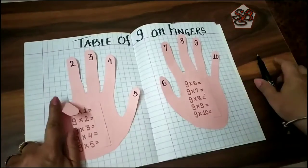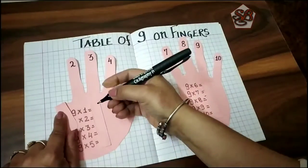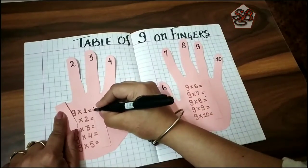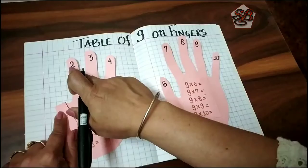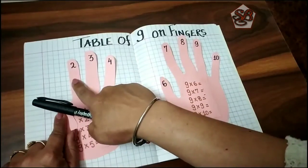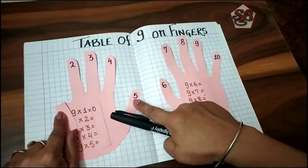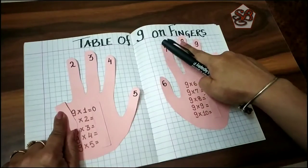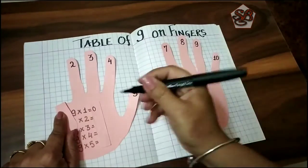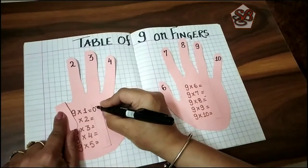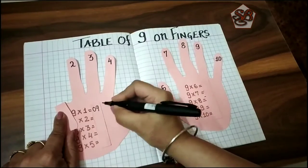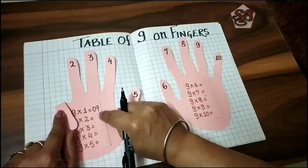So we write zero over here and we count the fingers on the right hand side: one, two, three, four, five, six, seven, eight, and nine. So we write here nine. Nine ones are nine.